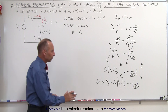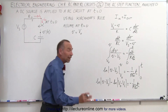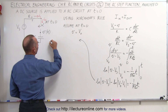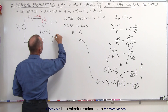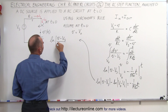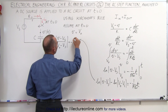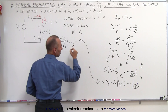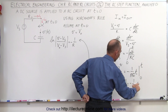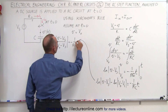The next step is to write this as a single expression, because the natural log of A minus the natural log of B equals the natural log of A over B. So we can write that the natural log of (V minus V_S) divided by (V_0 minus V_S) is equal to minus 1 over RC times t — noting that it should be RC, not RS.